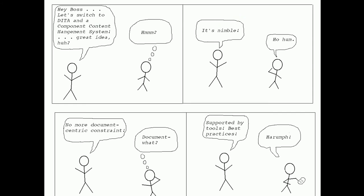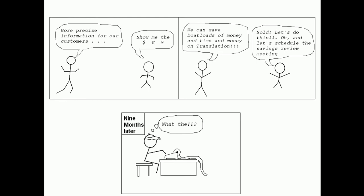Translation can be difficult. We come along and say, hey boss, let's switch to DITA and component content management. It's nimble, no more document-centric constraint, supported by tools and best practices — and by this time the boss has been distracted. Then we say we have more precise information for our customers, and the boss says show me the money. We say we can save boatloads of money and time on translation, and the boss says let's sign up for that.